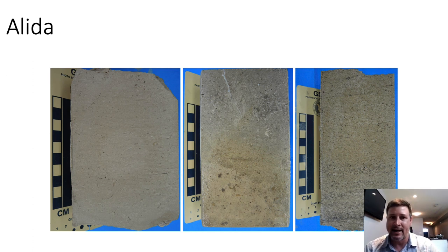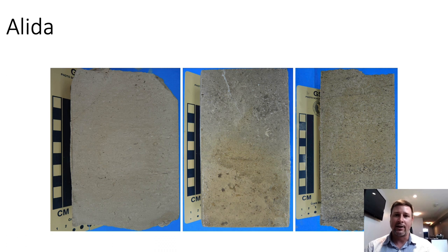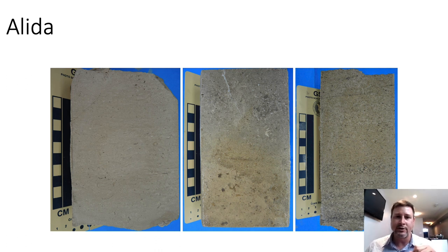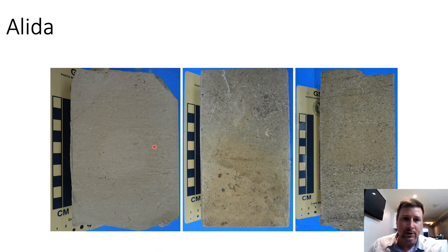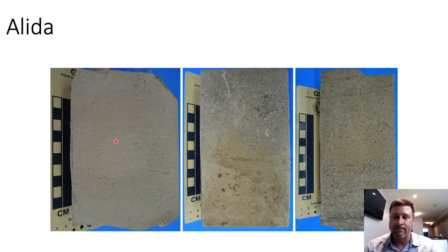Looking at some Elida facies quickly so we can spend time on the core. The Elida typifies to me an intertidal deposit. It's mostly interparticle porosity, and the allochems are quite clear to see — skeletal wackestone, skeletal packstone, ooid grainstones, and skeletal floatstones. In these pictures on the left, this is a typical skeletal wackestone of the Elida member. We can see bivalve fragments, echinoderm fragments, and what looks like a crinoid. The skeletal wackestone grains are abraded and broken — pretty well reworked into interparticle porosity.